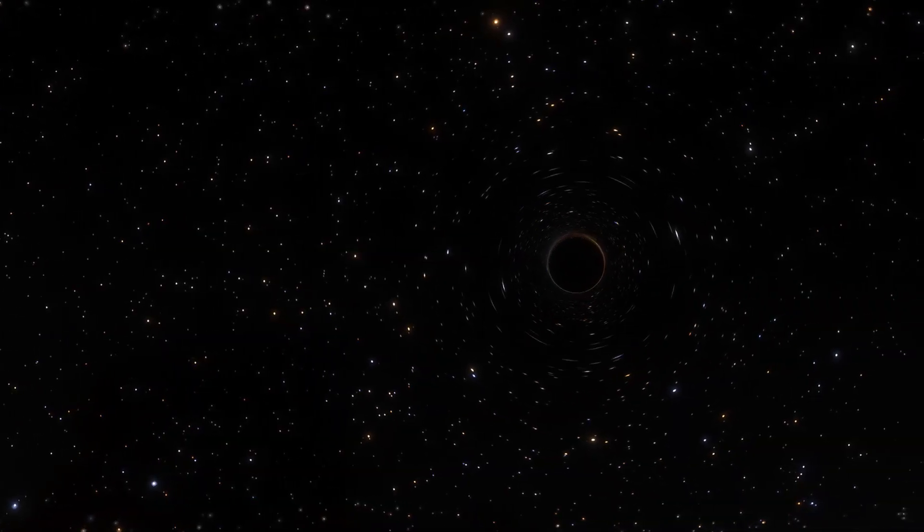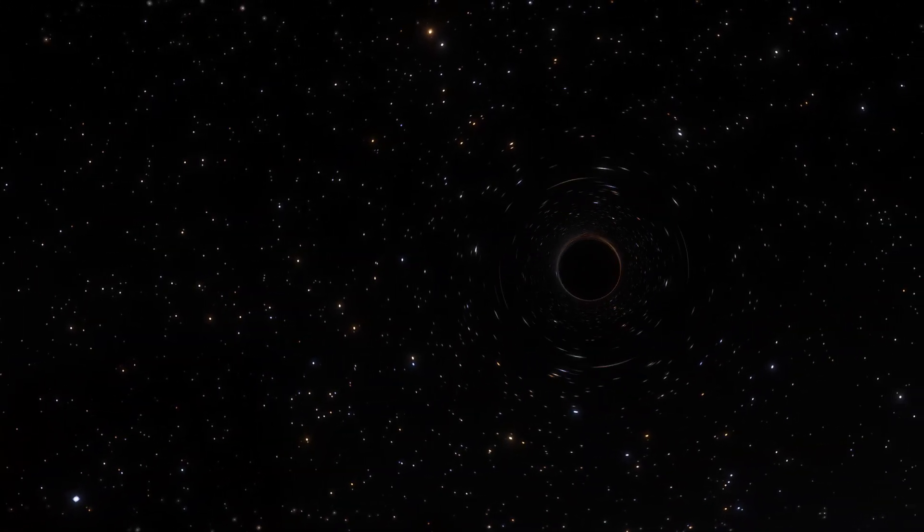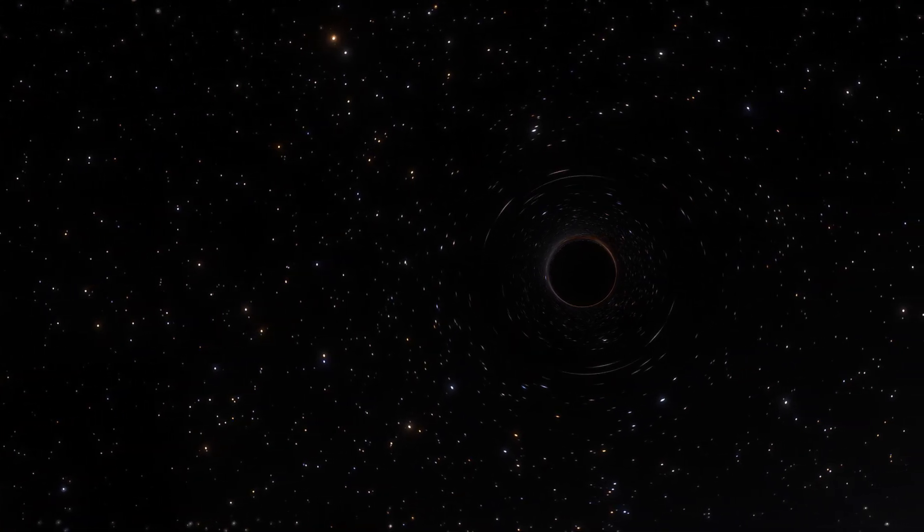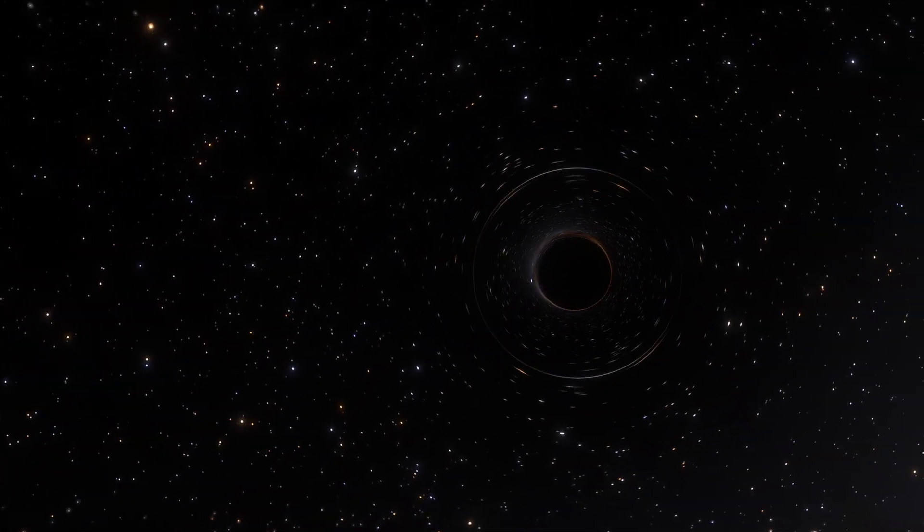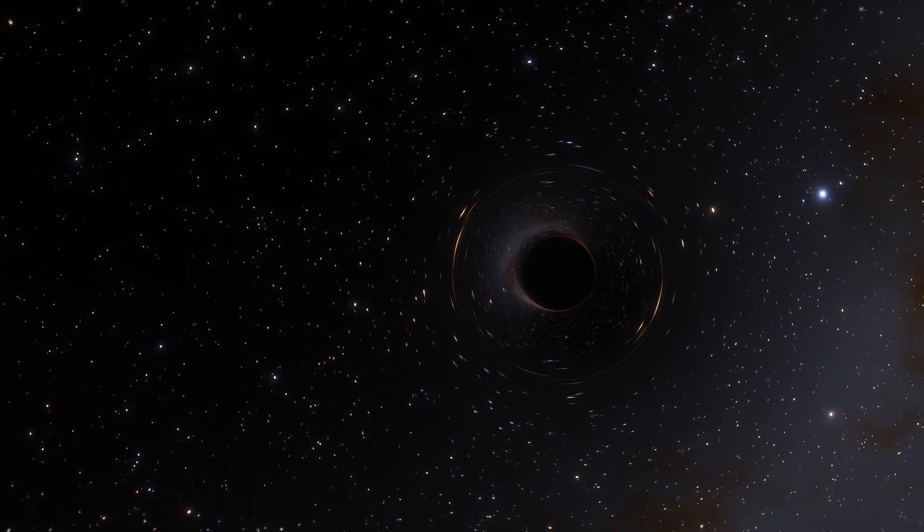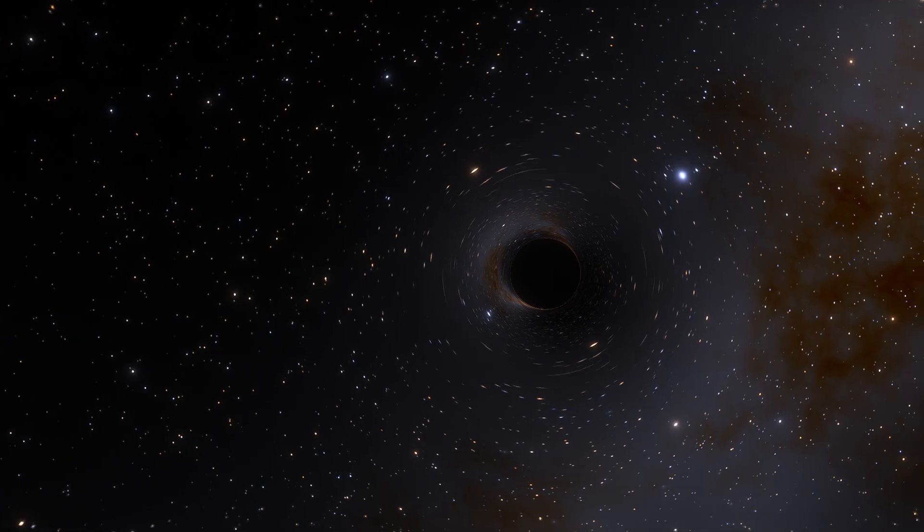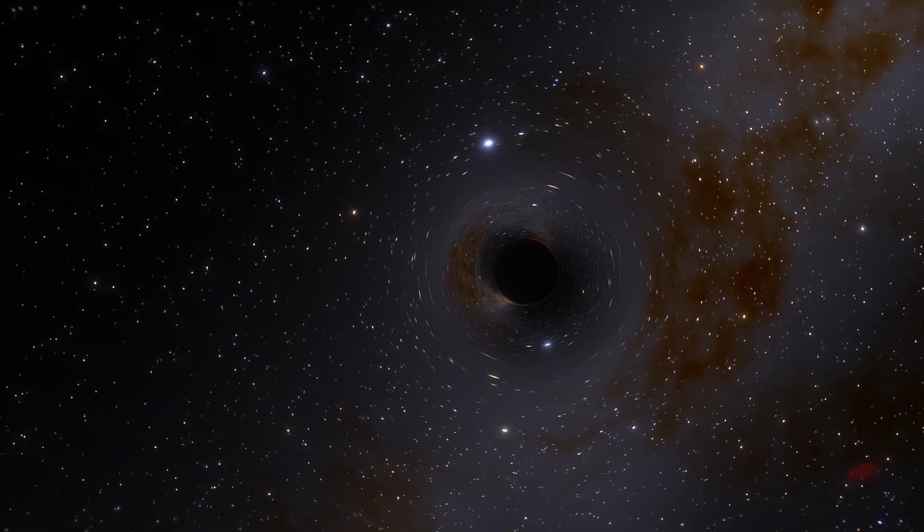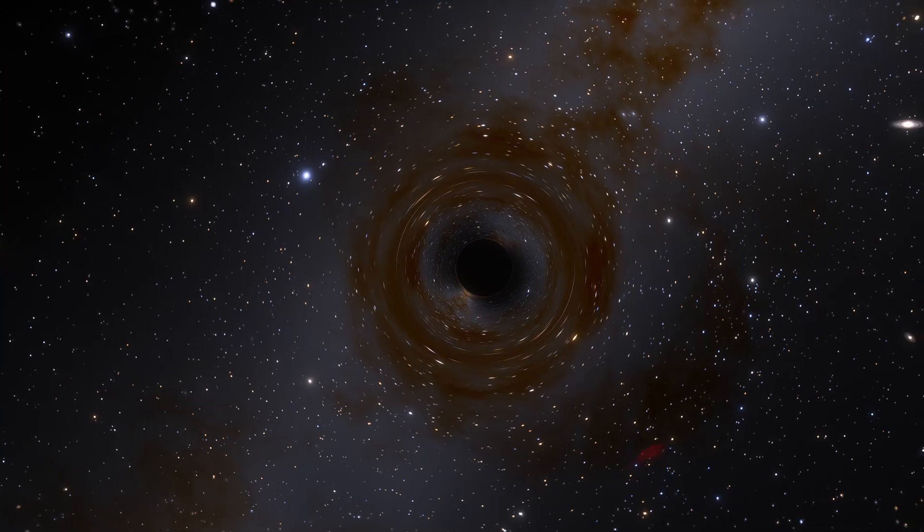Black holes and wormholes are special types of solutions to Einstein's equations, arising when the structure of spacetime is strongly bent by gravity. For example, when matter is extremely dense, the fabric of spacetime can become so curved that not even light can escape. This is a black hole.